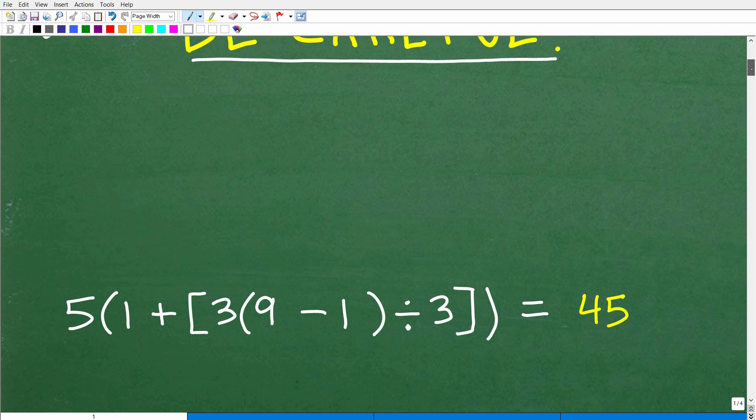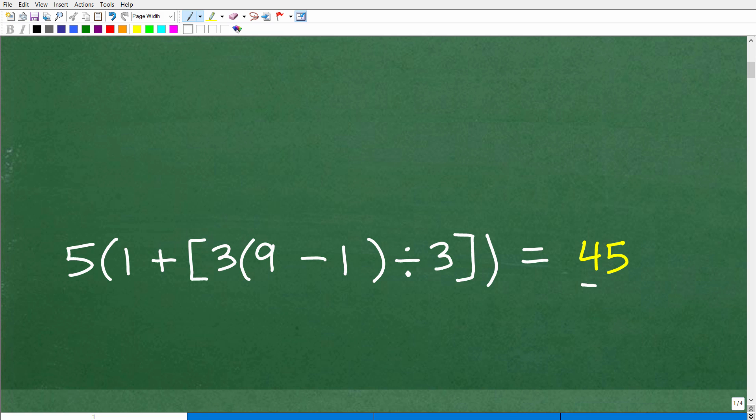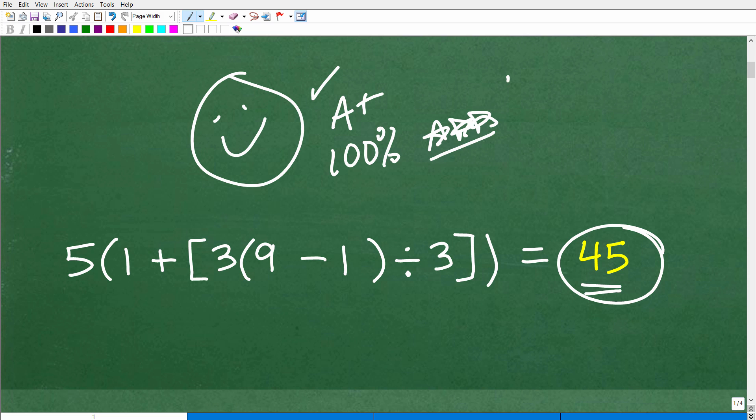But let's go ahead and take a look at the answer, and the answer is 45. So we have 5 times 1 plus bracket, 3 times 9 minus 1, all that divided by 3 bracket and parentheses. The answer is 45. All right, so how did you do? Well, if you got this right, let me give you a nice little happy face, check mark, an A plus, 100%, and we'll give you some stars so you can have an extra special day. Nice job.